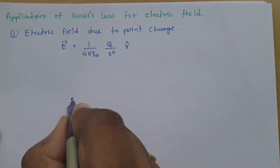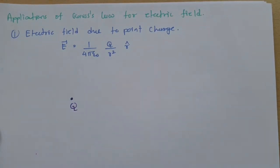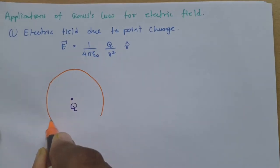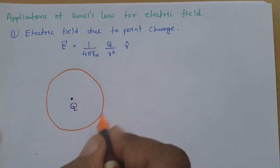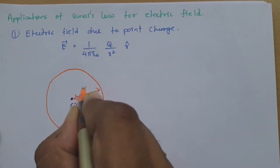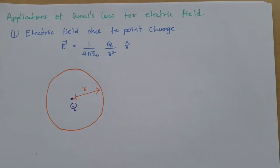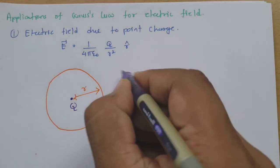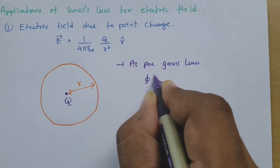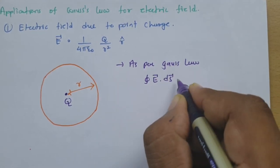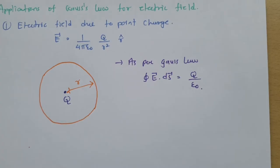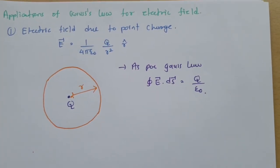if I have one point charge and an enclosed surface — which is a sphere at distance r — then as per Gauss's Law, the closed surface integral of E · dS equals q / ε₀.